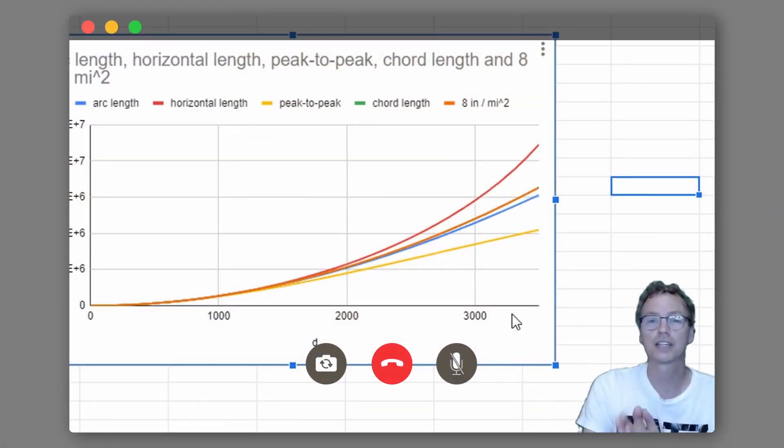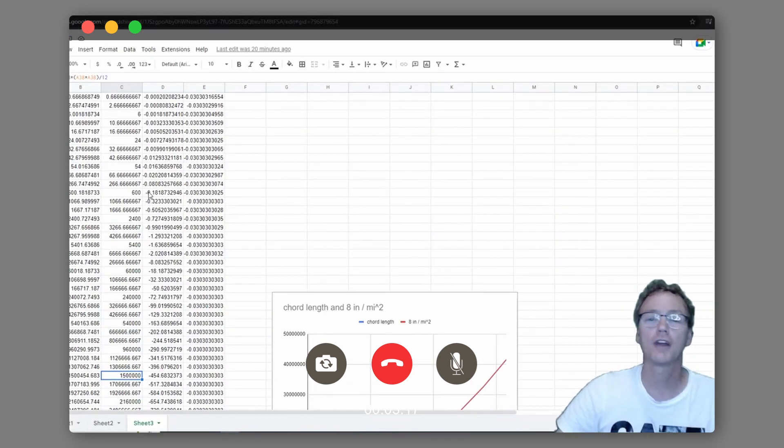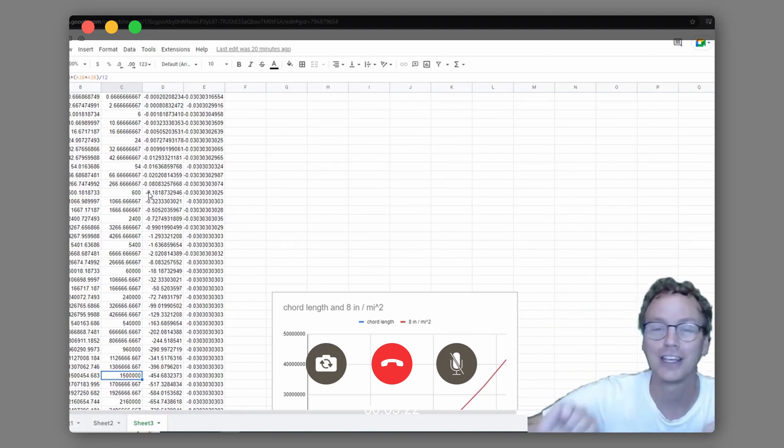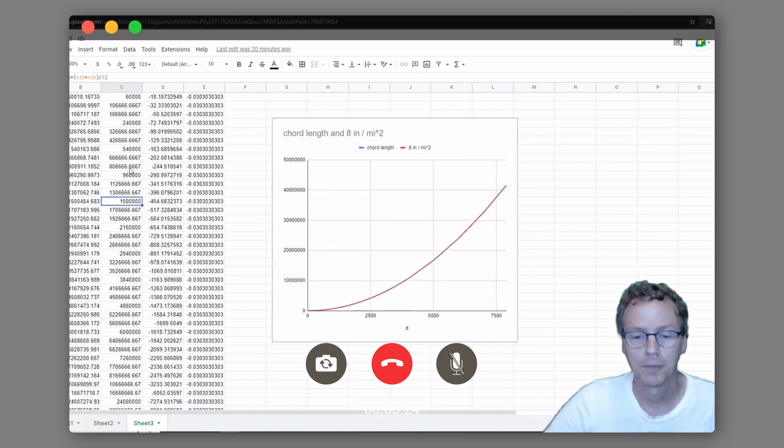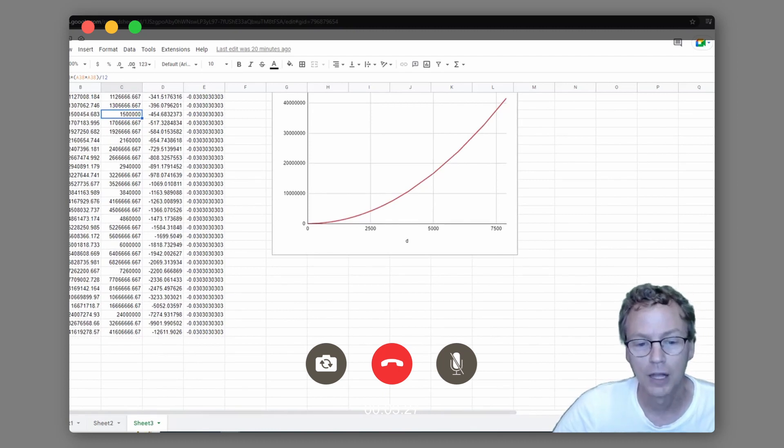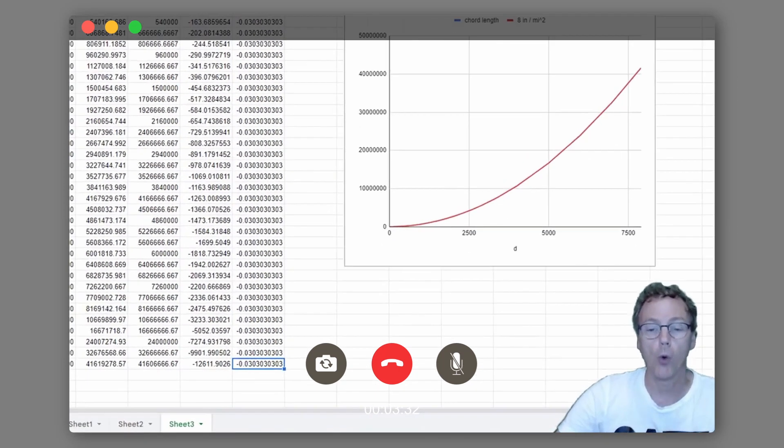And you cannot see it. The orange line and the green line line up so perfect that you can't even see it. So if you're not happy that a thousand miles is still a short distance in your book, take a look here. I've taken it all the way out to 7,900 miles. It's off by 0.03%.